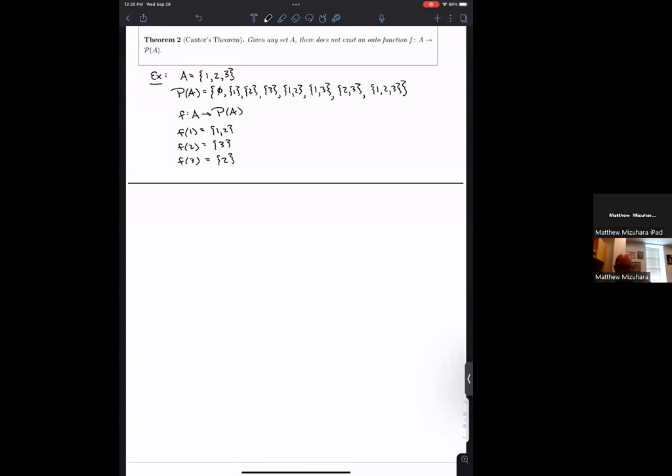Alright, so this video is going through the proof of Cantor's theorem, which we discussed briefly in class. As a reminder, it says, given any set A, there does not exist an onto function F from A to its own power set.